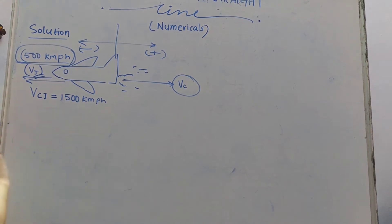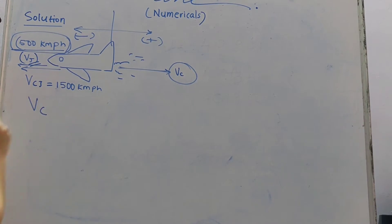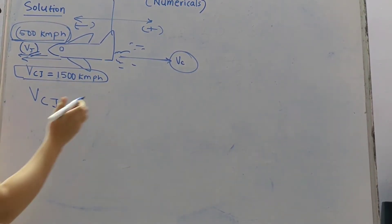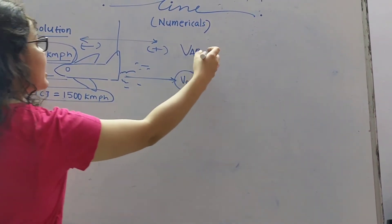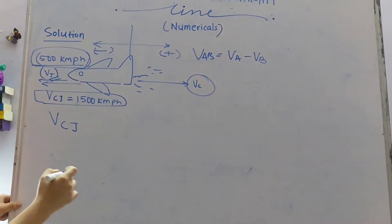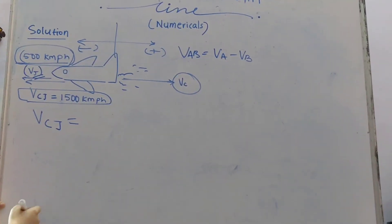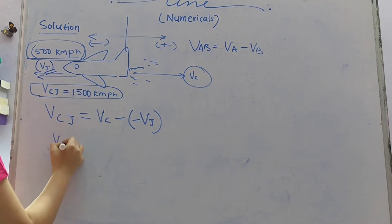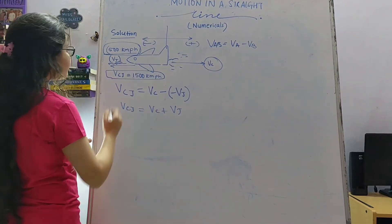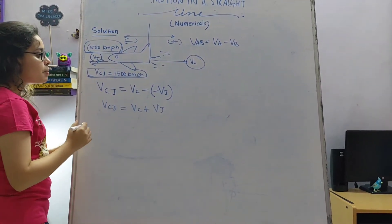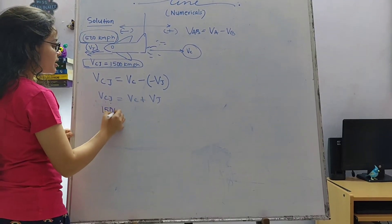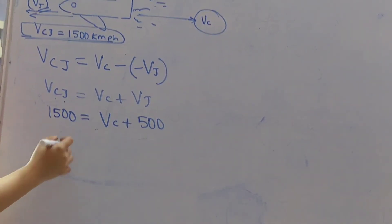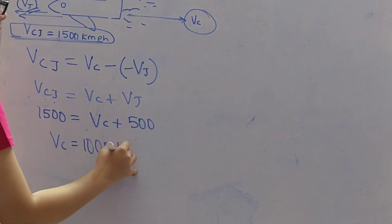Here velocity of some combustion product is not given to us but they have given velocity of combustion product with respect to the jet and they have given it as 1500 km per hour. By formula you know that relative velocity of A with respect to B is given by VA minus VB. So here it should be VC minus VJ, but that is not the case because VJ is in the negative direction. So it is VC minus of minus VJ which actually becomes VC plus VJ. If you carefully look at the given parameters, relative velocity of combustion with respect to the jet is 1500 km per hour. So that is equal to VC plus VJ is 500 km per hour. So VC is nothing but 1000 km per hour.